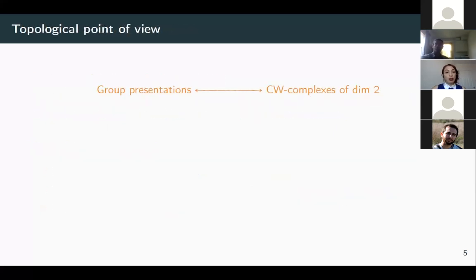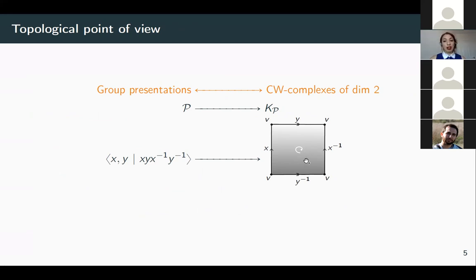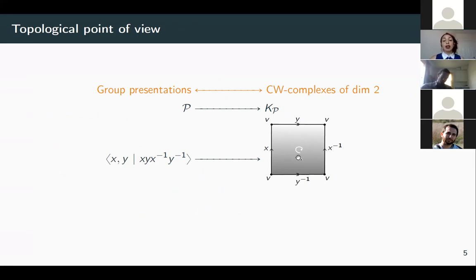From a topological point of view, presentations can be studied via CW complexes of dimension 2. Given a presentation, you construct a 2-dimensional CW complex K(P) as follows: start with a single 0-cell, attach an oriented 1-cell for each generator — giving a bouquet of circles — and then attach a 2-cell for each relator whose attaching map corresponds to the relator word. For example, the presentation of the torus gives a CW complex which is the torus itself, and this complex has fundamental group presented by P.